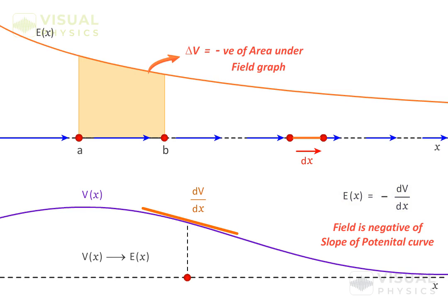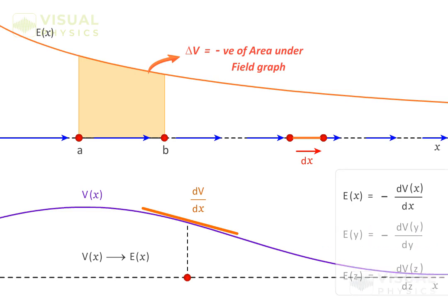So in order to find the component of field along an axis, we need to know the function or variation of potential along that axis.